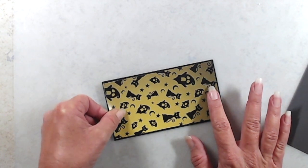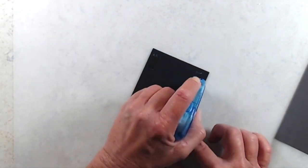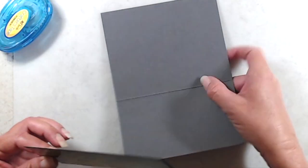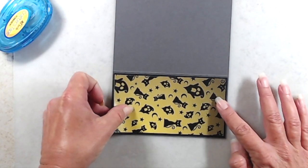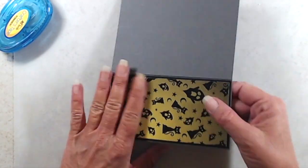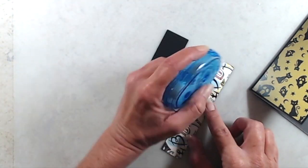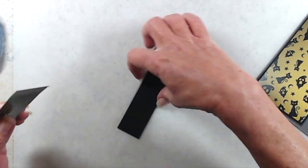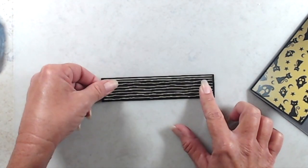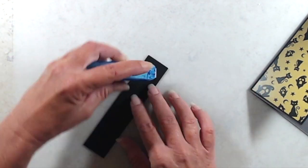Next, I adhered that panel to the shorter panel on the front of the card, again using my tape runner. I adhered the striped paper to a piece of black cardstock that is cut slightly larger than the striped paper, and I adhered that to the right side of the card front.